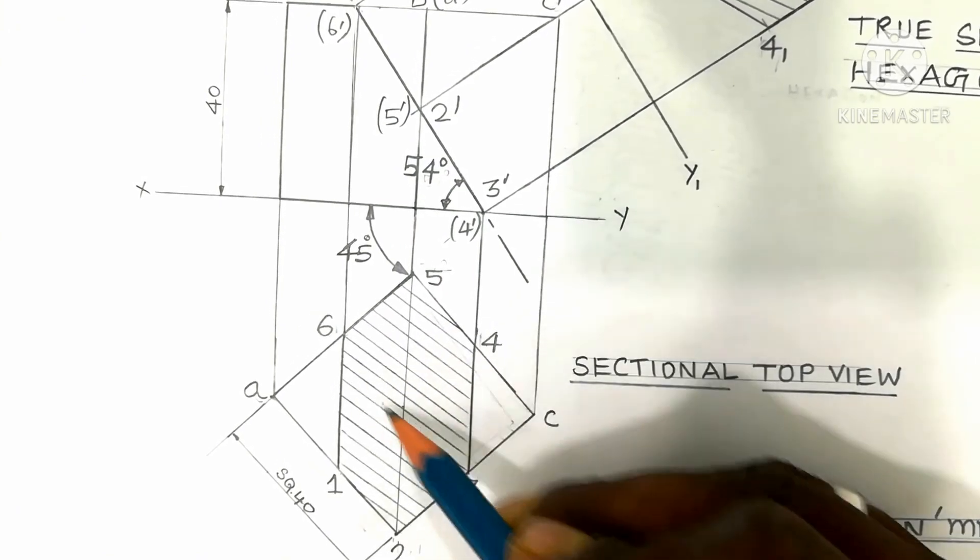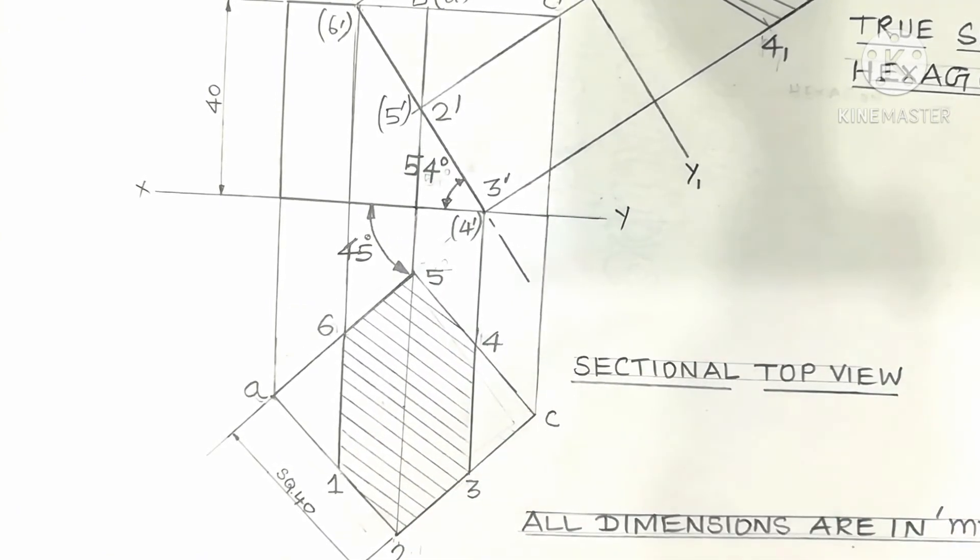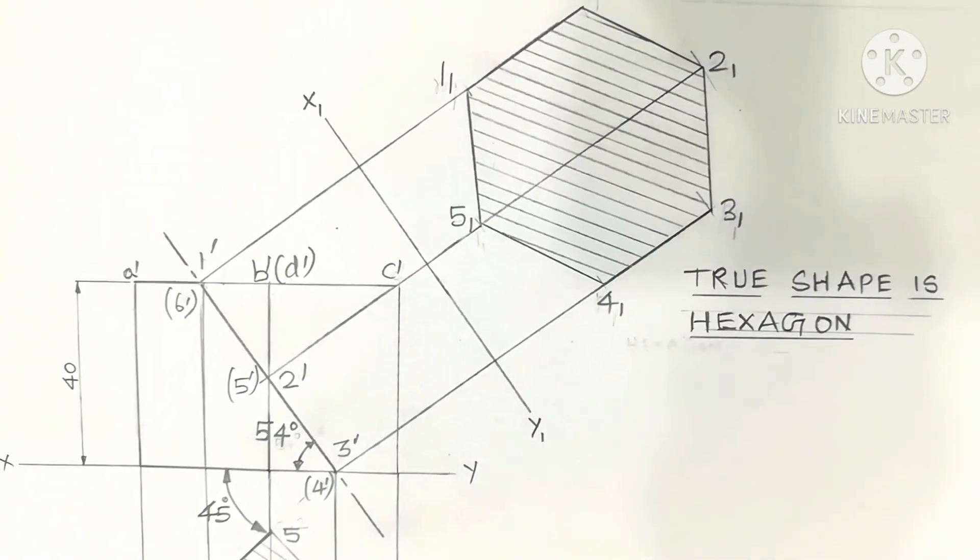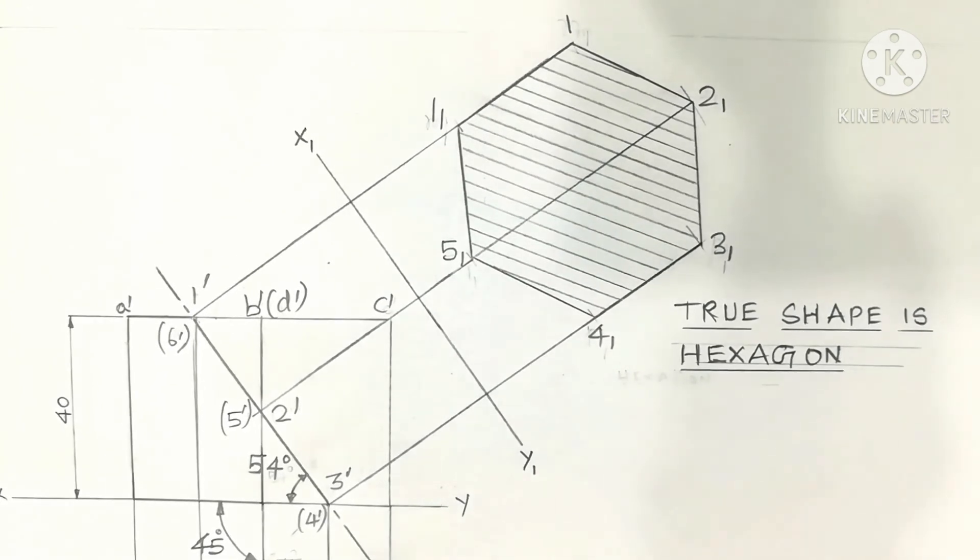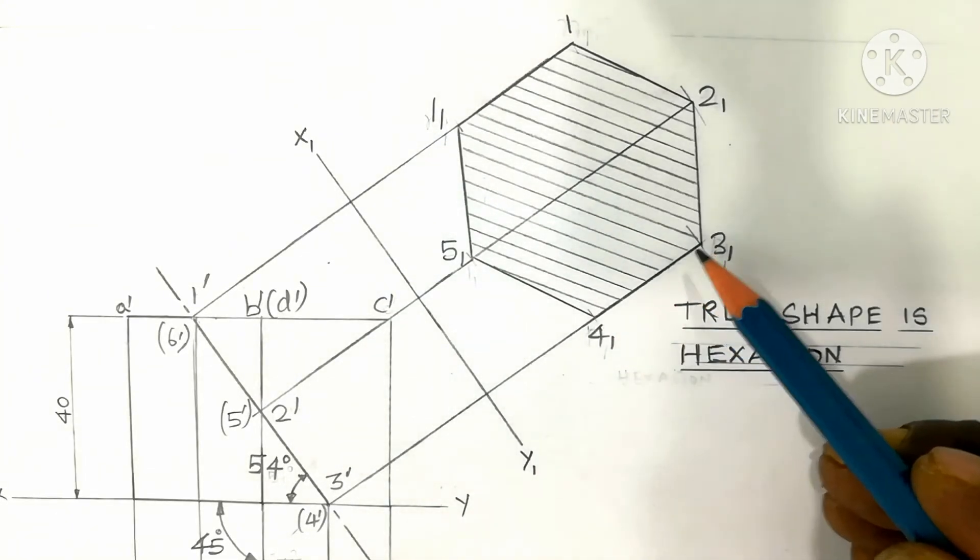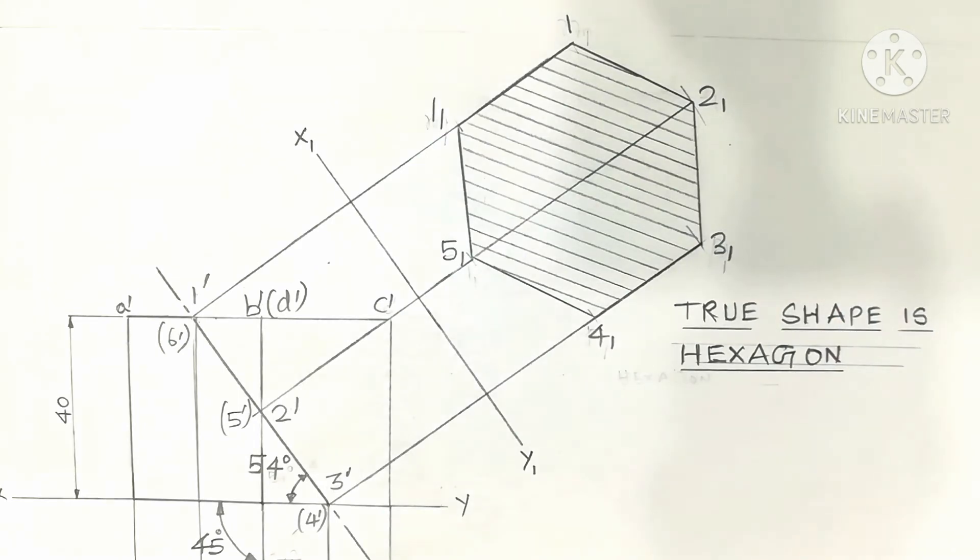Inclined, parallel, thin lines. This is the HB pencil line. The true shape will be the regular hexagon. That view is called the true shape of the hexagon, or the true shape of the section. If you cut the hexagon shape, the cube is cut.